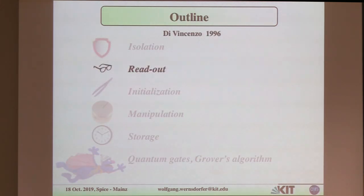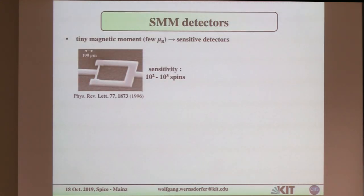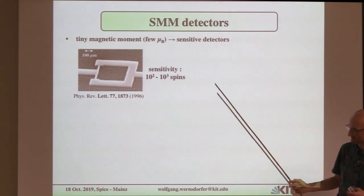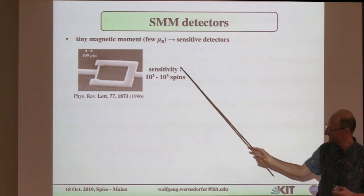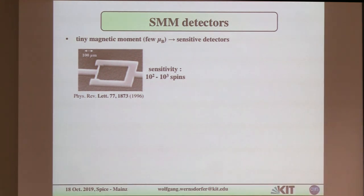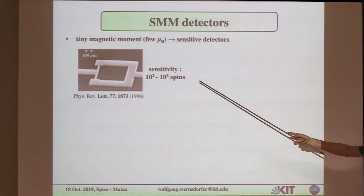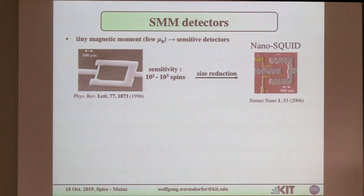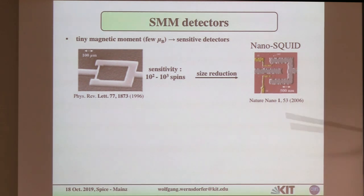Now we have to read out the system. There are a lot of different possibilities — it's not easy. I started my PhD with microsquids, and we could study nanoparticles, but they have a sensitivity that is not enough to study a single nuclear spin. The first improvement was the nanosquid, where you have a carbon nanotube in the SQUID ring — this can measure a single molecule, a single electronic spin. There are also other possibilities, such as graphene-based devices, and Marco Affronte, the second speaker, will tell you more about this.